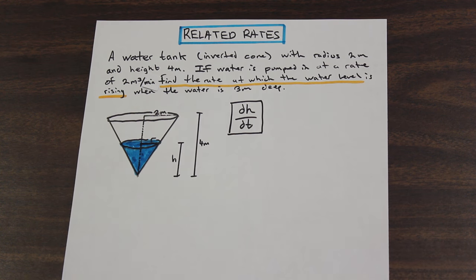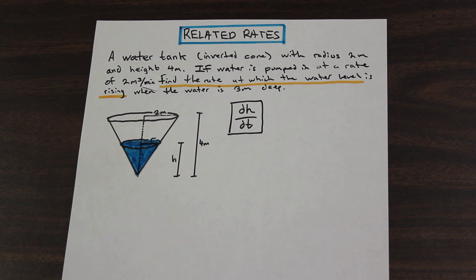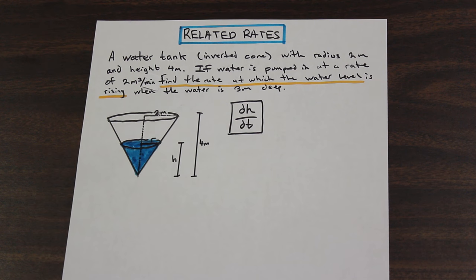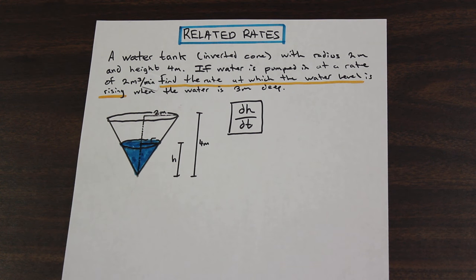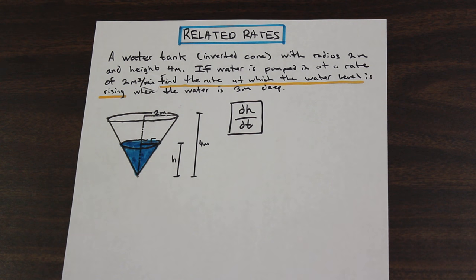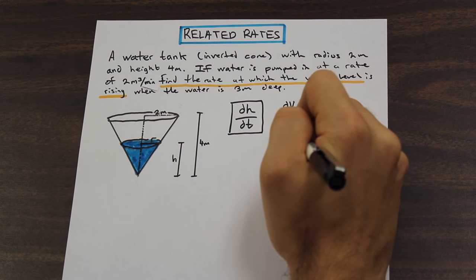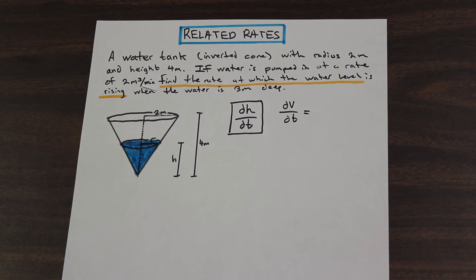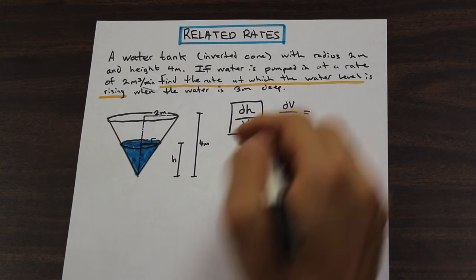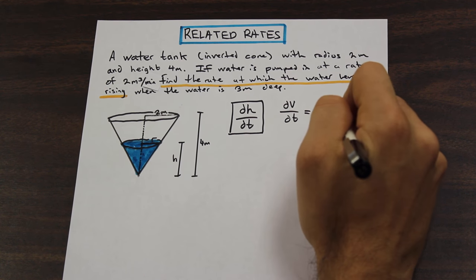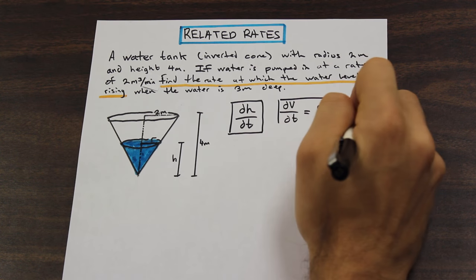Now that we've identified what we're looking for, let's see what we're given. We're given a rate of two meters cubed per minute, which is the rate at which water is being pumped into the cone — the volume changing with respect to time. We call that DV/DT, and DV/DT equals two meters cubed per minute. That's given to us.